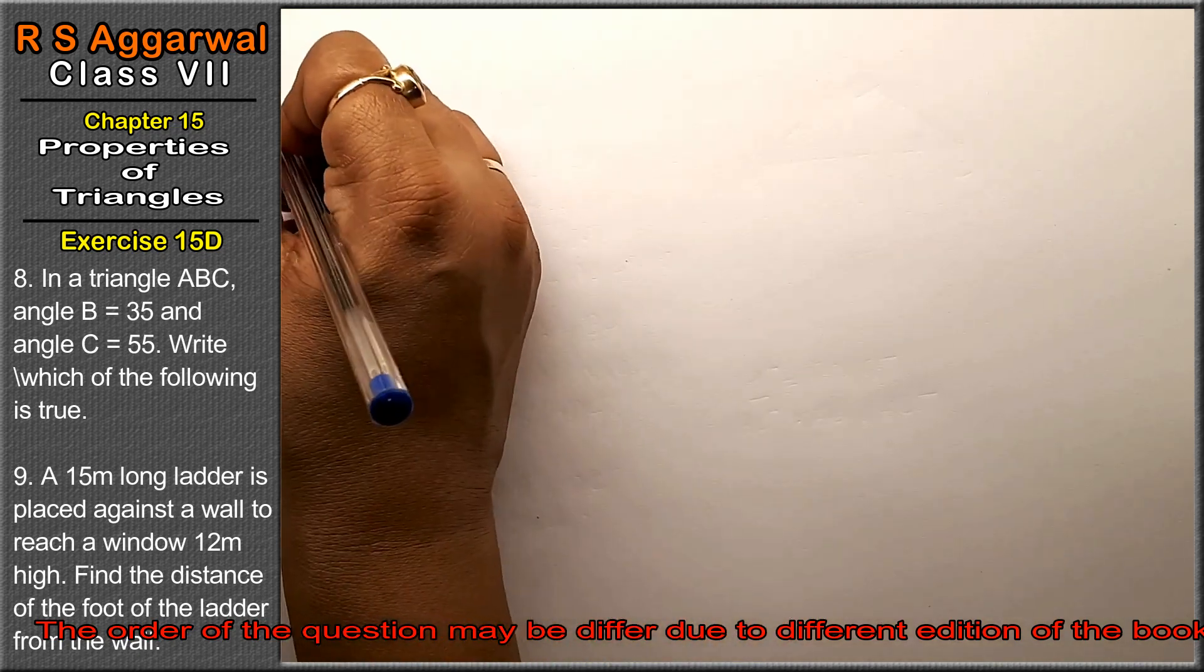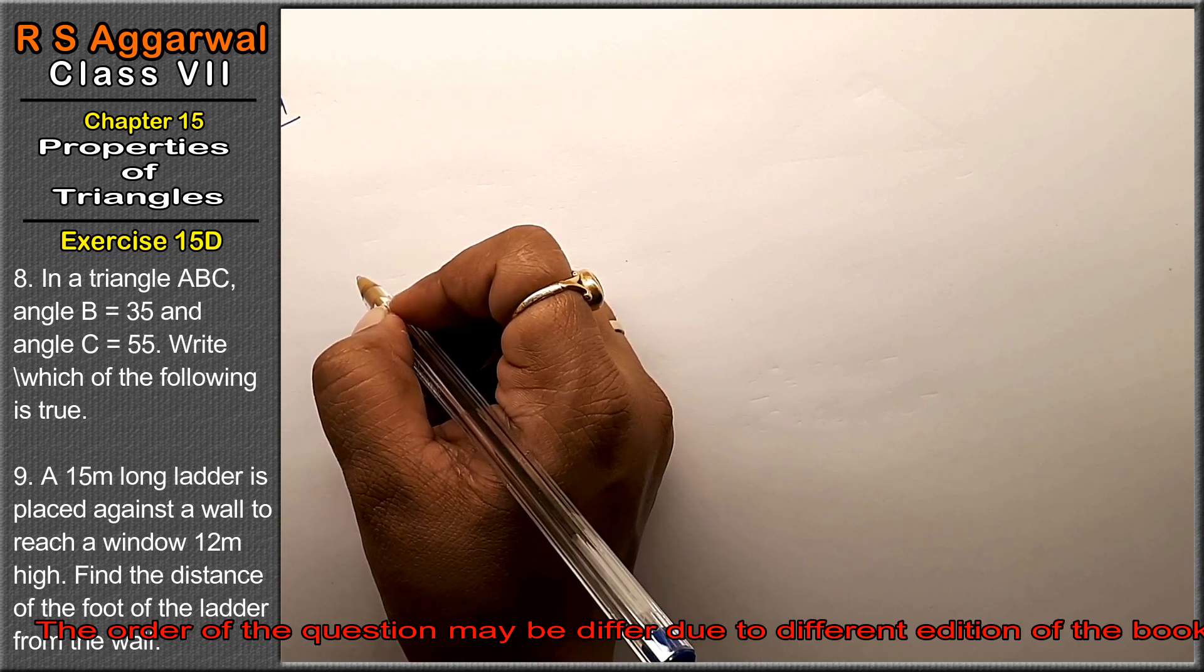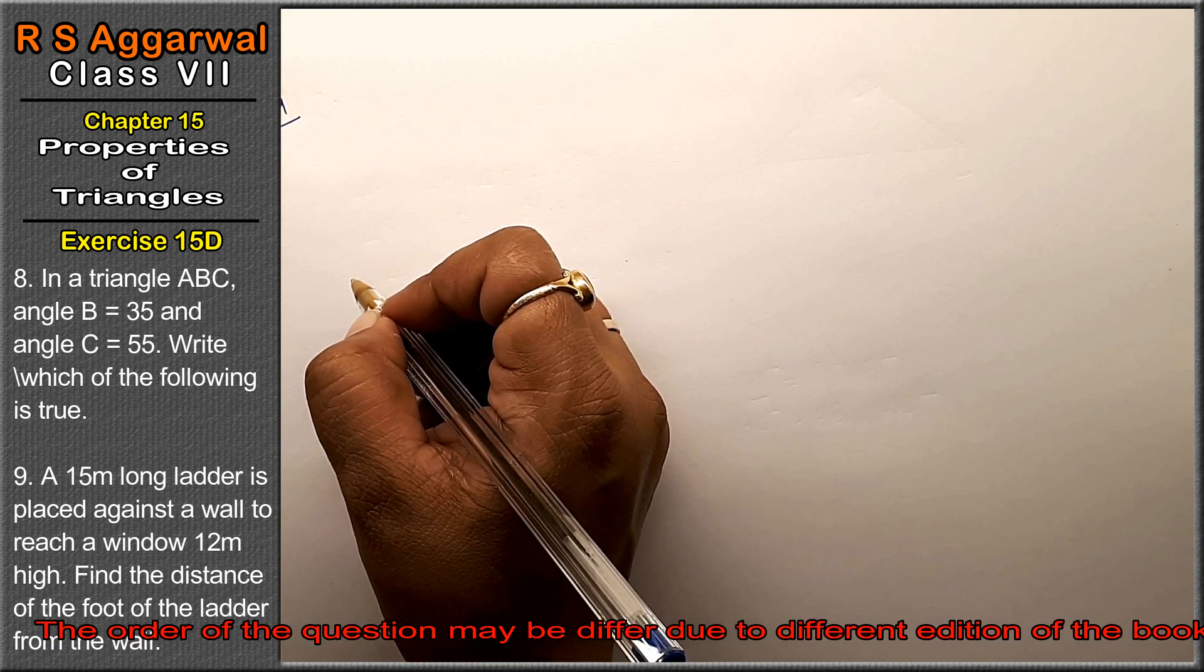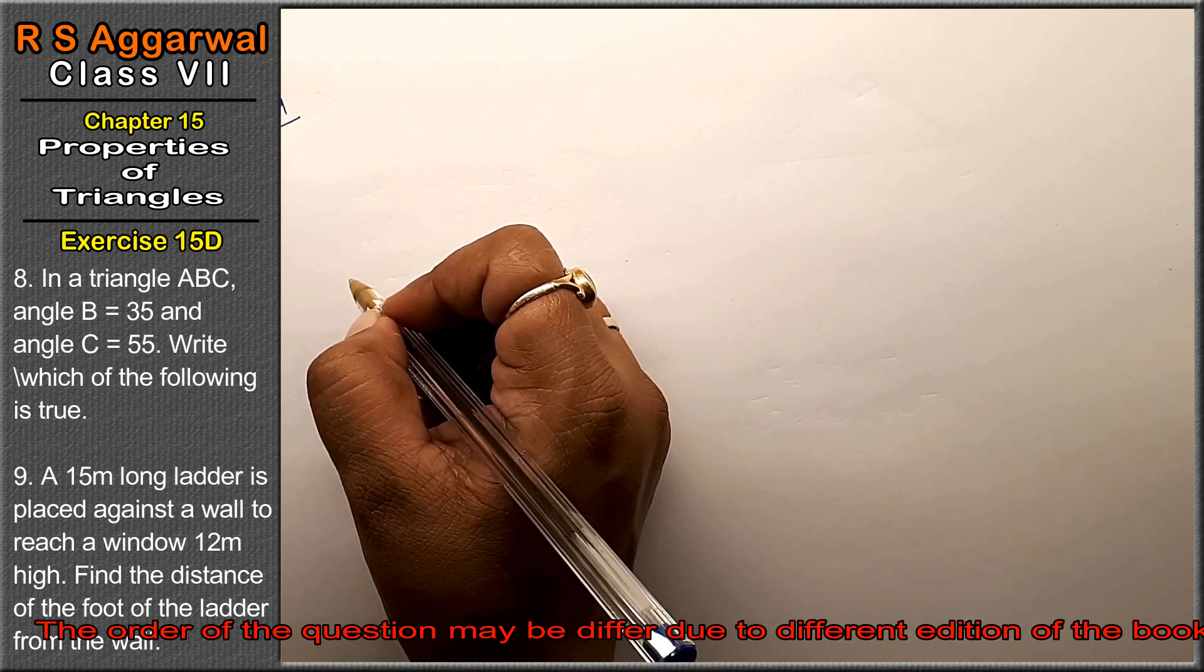Let's do question number 9 of exercise 15D, Properties of Triangles. Question 9: A 15 meter long ladder is placed against a wall to reach a window of 12 meters high.